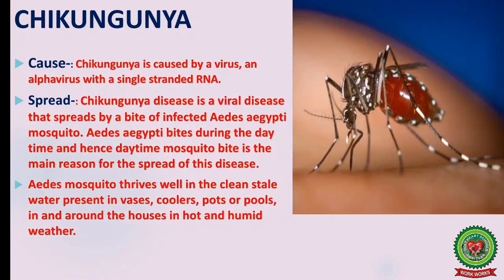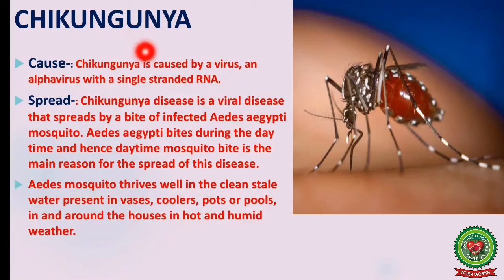Chikungunya is a viral disease transmitted to humans by the bite of infected Aedes aegypti mosquitoes. It causes severe and persistent joint pain, body rash, headache, and fever. Initial symptoms are similar to those of dengue. It is usually not life-threatening, but joint pains can last a very long time and full recovery may take months. Patients usually get lifelong immunity, so re-infections are very rare. Chikungunya is caused by an alphavirus with a single-stranded RNA.